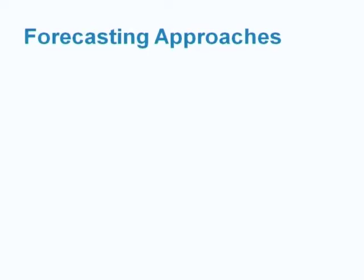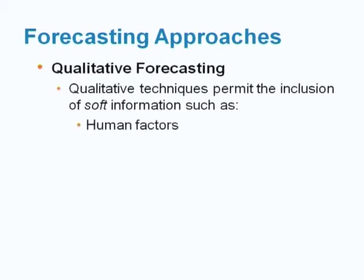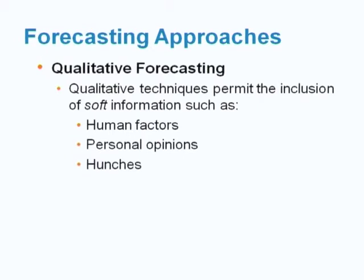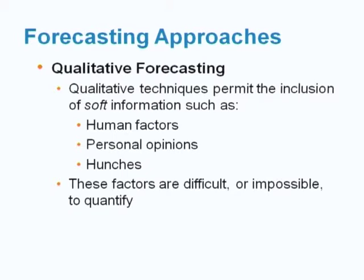There are two general approaches to forecasting. The first is qualitative forecasting. Qualitative methods consist of much subjective input. Qualitative techniques permit inclusion of soft information such as human factors, personal opinion, and hunches. These factors are difficult or impossible to quantify.